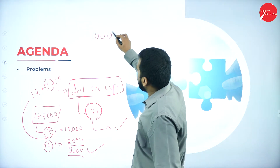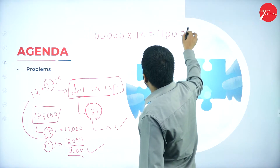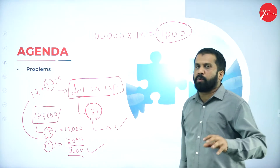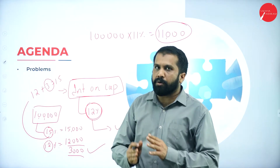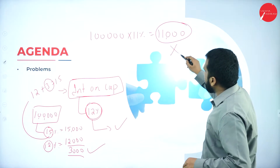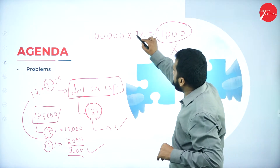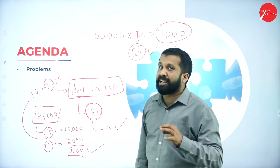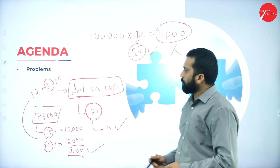If in your examination they give 1 lakh capital at 11% interest, that is 11,000. In inadmissible expenses you are not supposed to take anything because it is less than 12%. If it is 13%, the extra 1% must be considered as inadmissible.